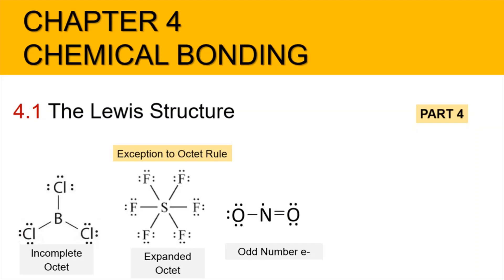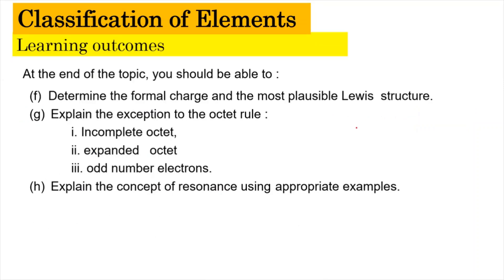Hi, Assalamualaikum and a very good morning. We are still in Chapter 4, Chemical Bonding. Now we're going to focus on the subtopic of 4.1 Lewis Structure, Part 4 of the video. In this video, we're going to learn how to explain the exceptions to the octet rule, which consists of the incomplete octet, the expanded octet, and the odd number electron.